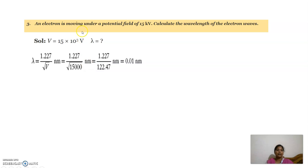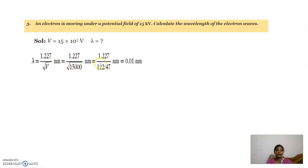The next problem: an electron is moving under a potential field of 15 kilo volts — calculate the wavelength. V is given as 15 into 10 power 3 volts. The de Broglie wavelength associated with an electron is lambda equal to 1.227 by root V nanometers. Substituting V equal to 15 into 10 power 3, we get 0.01 nanometer.